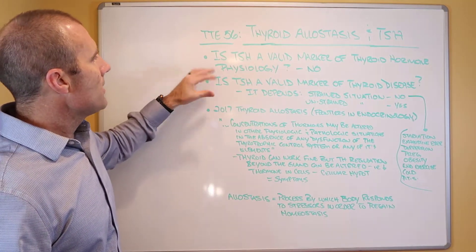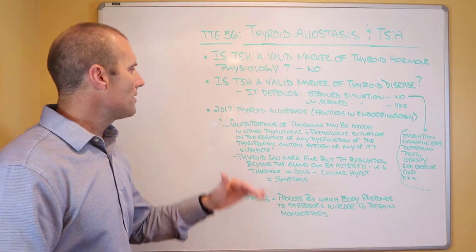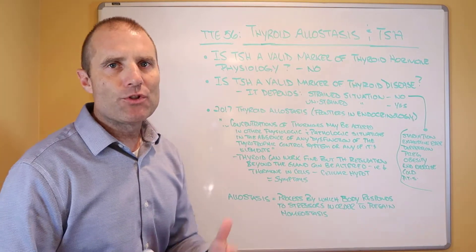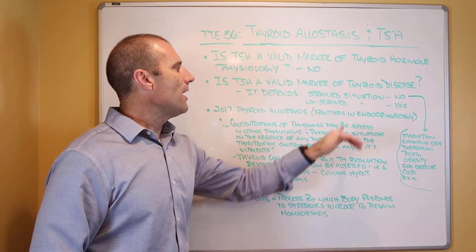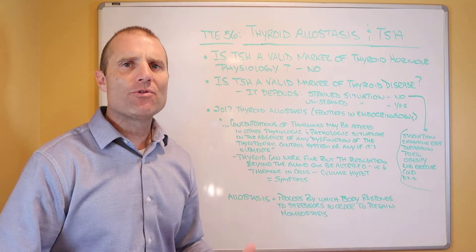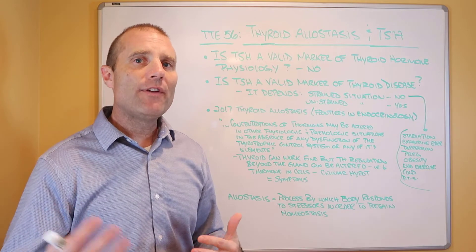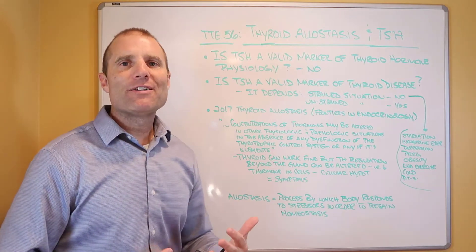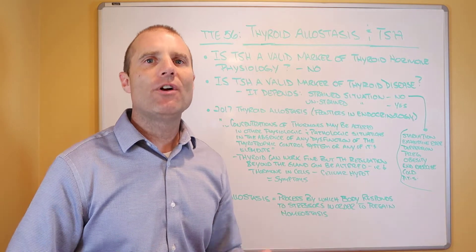A couple of questions answered: Is TSH a valid marker of thyroid hormone physiology in the body? The answer continues to be no, as expressed again in this paper. Is TSH a valid marker of thyroid disease, which is what most conventional medicine doctors are looking for? The answer is: it depends. If you're in an unstrained situation — at rest, with no major physical, chemical, emotional, or microbial stress — then yes, TSH may be a good indicator that elevated or low values suggest thyroid disease. But most of us aren't going to doctors feeling fantastic in unstressed or unstrained conditions.